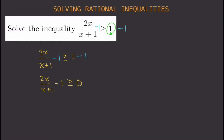The next step is to write the left side as a single fraction. As of the moment, you have two terms: 2x divided by x plus 1, and minus 1. You want them to have the same denominator. So we're going to give the second term the same denominator, x plus 1.